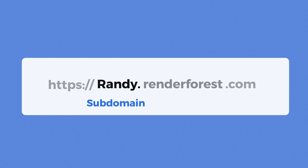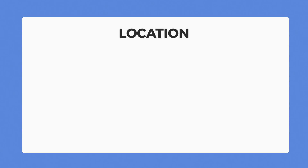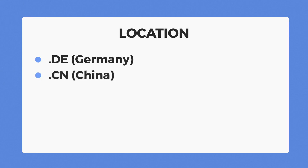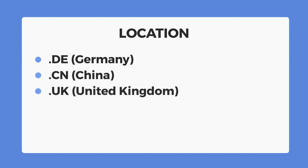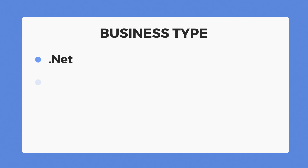Domain extensions, or top-level domains, are also a factor to think about. Depending on your brand and industry, here are some alternatives to .com. One example is based on location: .de is Germany, .cn is China, .uk is United Kingdom, .nl is Netherlands, and .eu is European Union. You can also pick one based on business type: .net, .org, .edu, .gov, and .pro. .pro is sometimes used by legal and medical services.